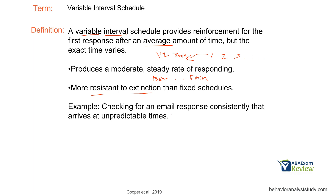For example, you check for an email response that arrives at unpredictable times. You send an email at 9 a.m., check at 10, check at 11, and finally at 1 p.m. you get a response. The next day you send one at 9 a.m. and someone responds at 10. This is a variable interval schedule — it's not based on your responses or how often you check, but only the passage of time.